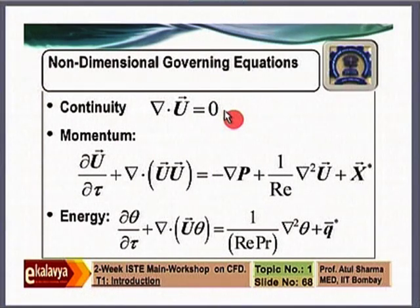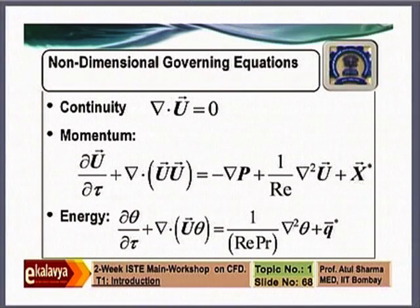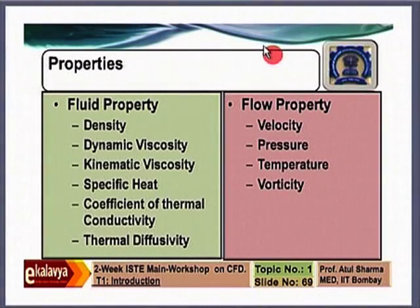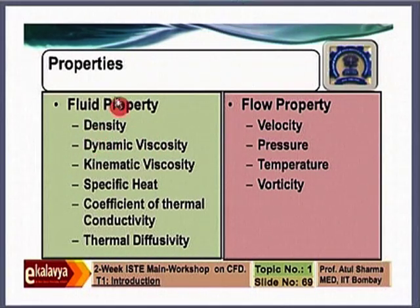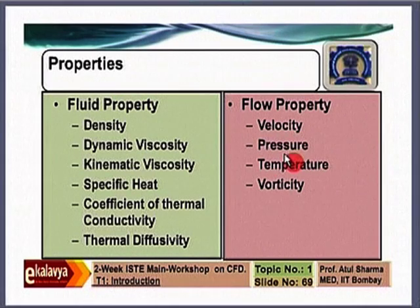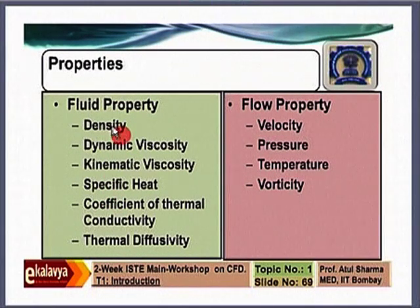Capital U here is non-dimensional velocity. In these lectures, small letters denote dimensional form and capital letters denote non-dimensional form. Regarding properties: flow properties (the 'movie' in fluid mechanics) are velocities, pressures, temperature, and vorticity. Thermophysical fluid properties include density, two types of viscosity, specific heat, thermal conductivity, and thermal diffusivity. Note there are two types of properties.